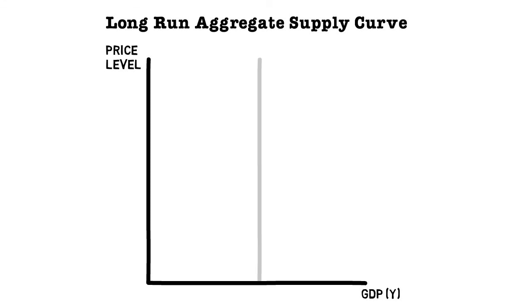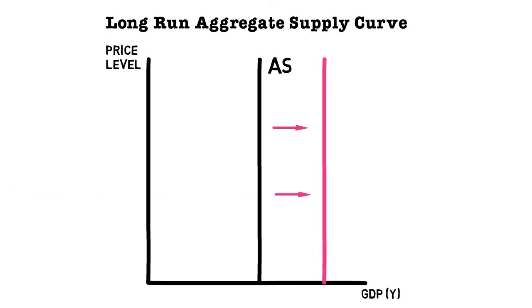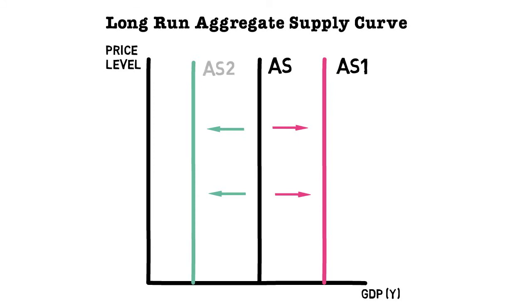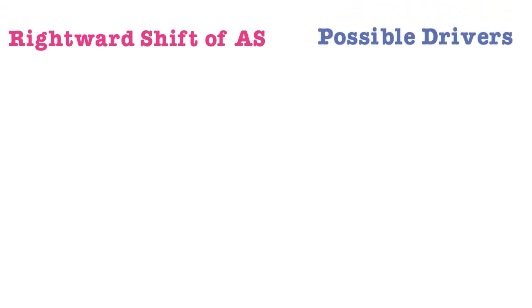In the long run, we again look at the relationship between price level and GDP, but the long run aggregate supply curve is vertical, meaning there is no relationship between price and GDP — it is independent of price. The long run aggregate supply curve can also shift rightwards, indicating an increase in aggregate supply shown as AS1, or shift leftwards, indicating a decrease in long run aggregate supply as shown by AS2.